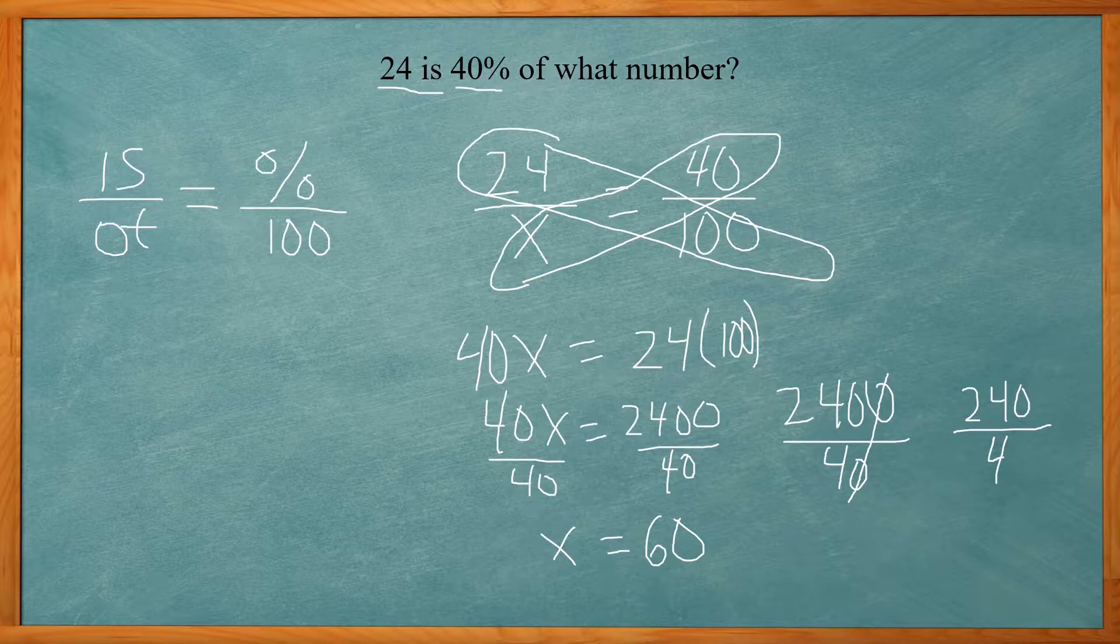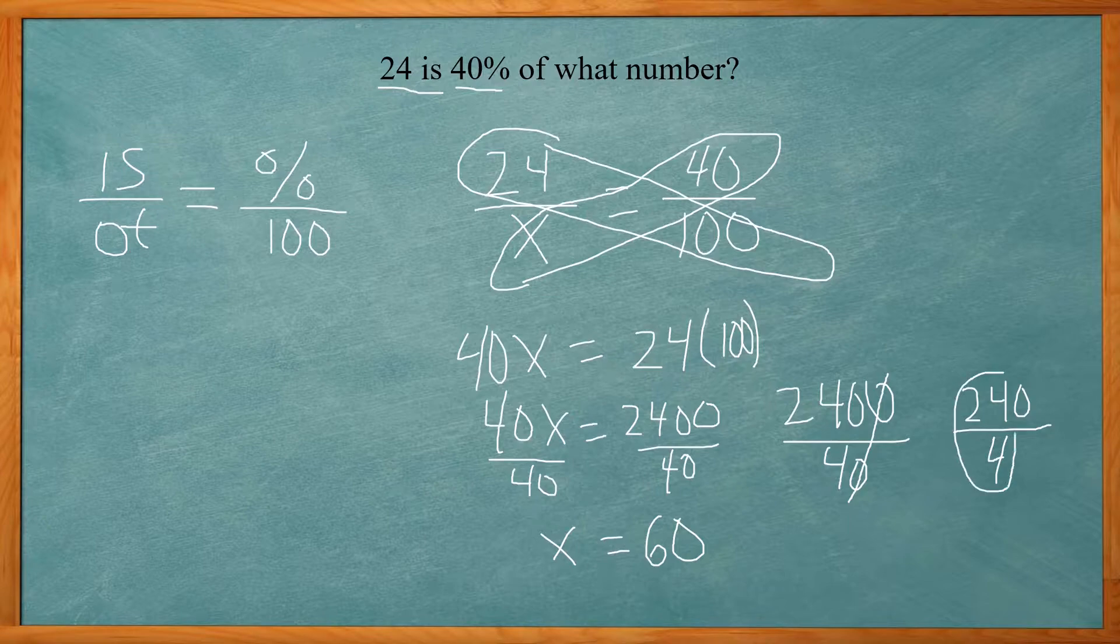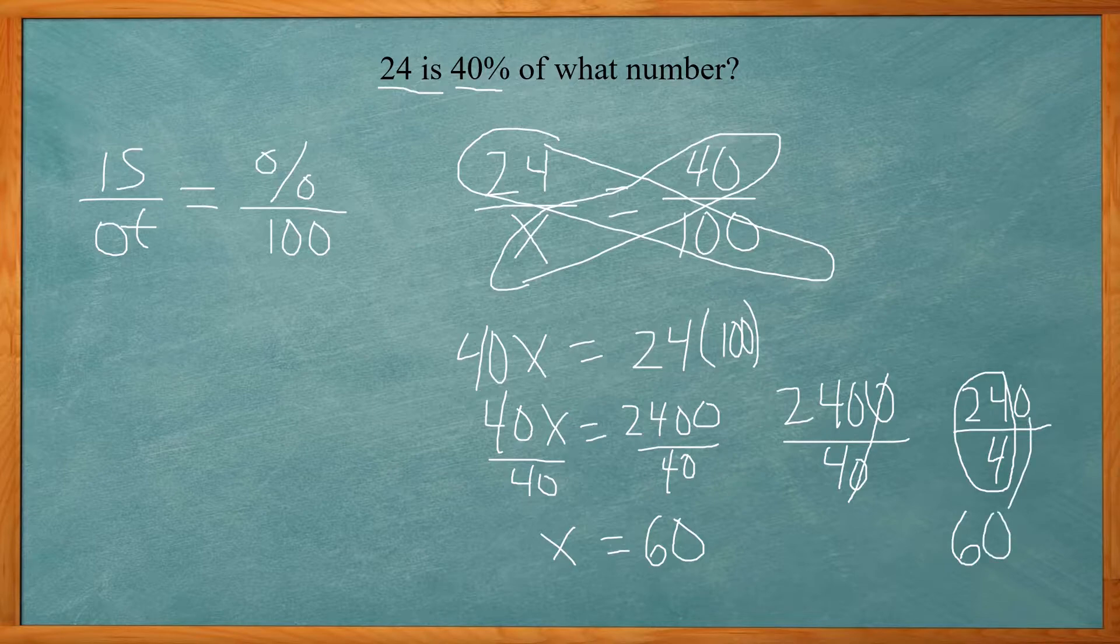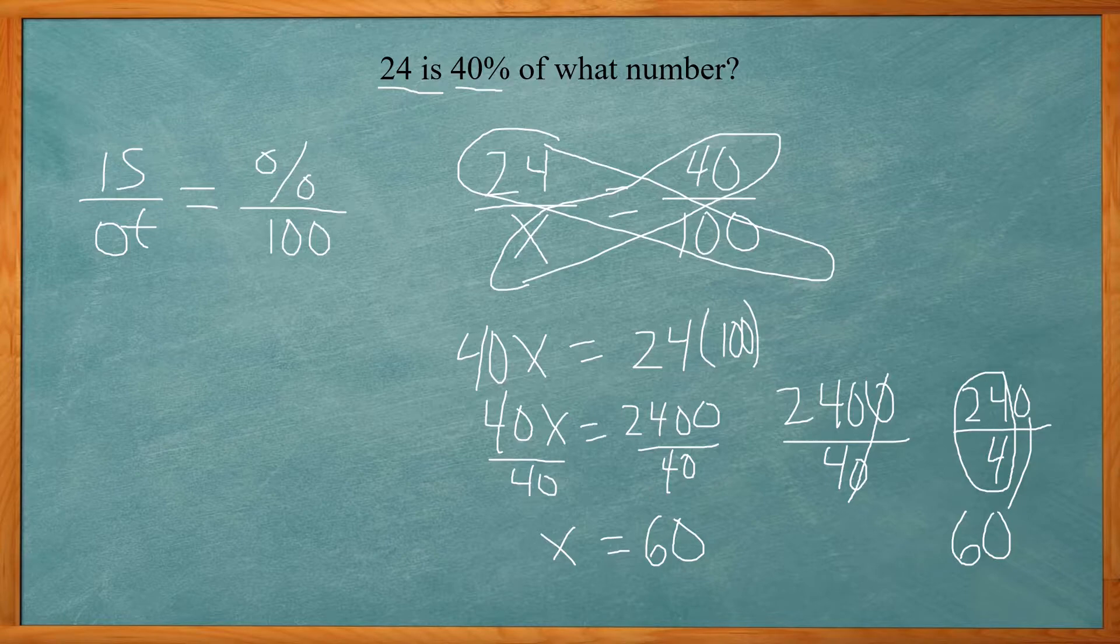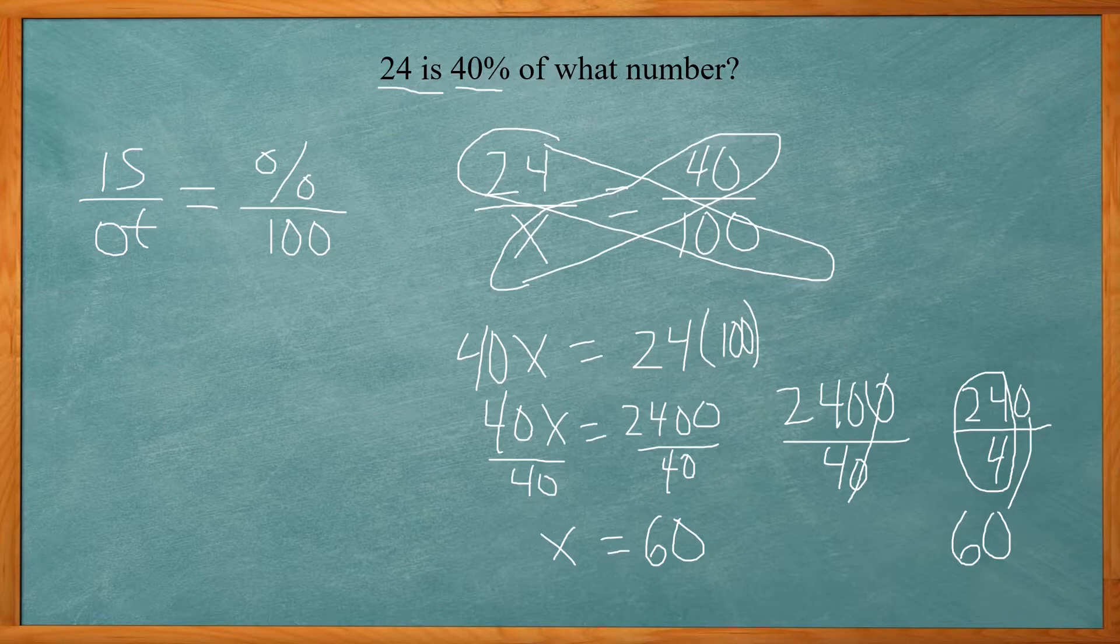Now, you know, four can go into 24 six times. I'm just going to look at that right now. So that's going to be six. And then you just bring down the zero. So it's going to be 60. So that's the quick way to divide that. Most of these problems, the math should be fairly simple. It shouldn't be anything too complex. So this is a shortcut way to do the division.